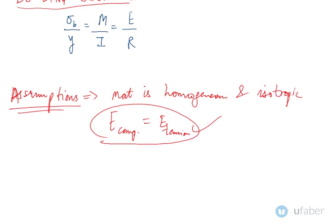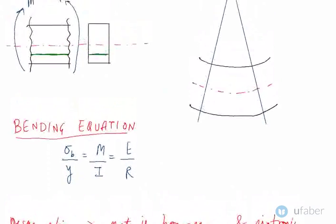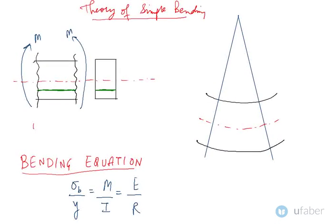Now looking at the diagram above, this is the section of a beam being applied by a bending moment M. This is the neutral axis, the cross-sectional view of the beam. This is the topmost layer and this is the bottommost layer. We are considering an intermediate layer between the neutral axis.